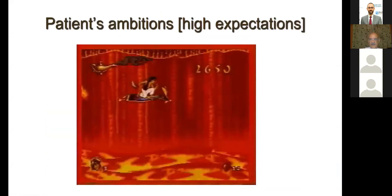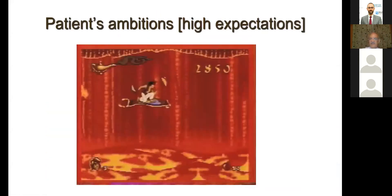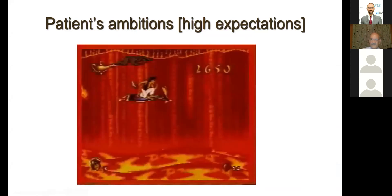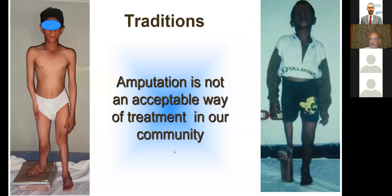The second problem is high patient expectations. Amputation is not an acceptable way of treatment in our community — it's either shortening, but no amputation. We have a patient with severe shortening for 35 years who used a wooden block instead of a prosthesis. Historically, the recommended treatment of fibular or tibial hemelia is amputation.